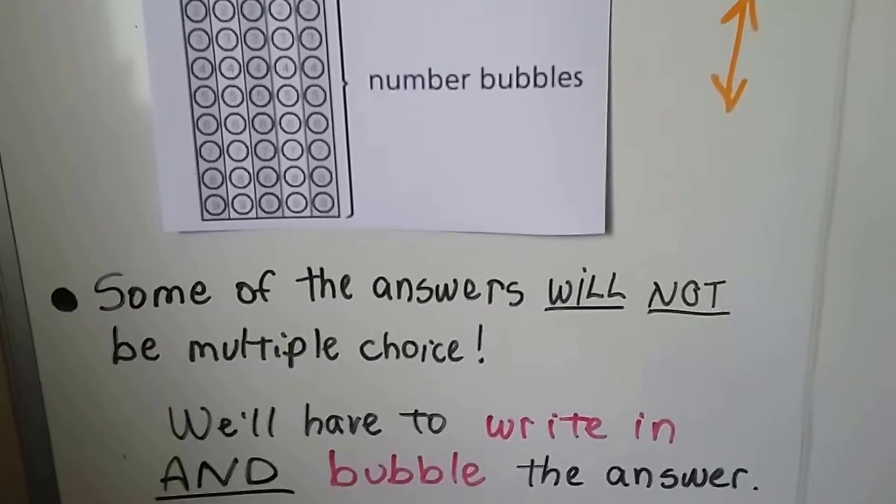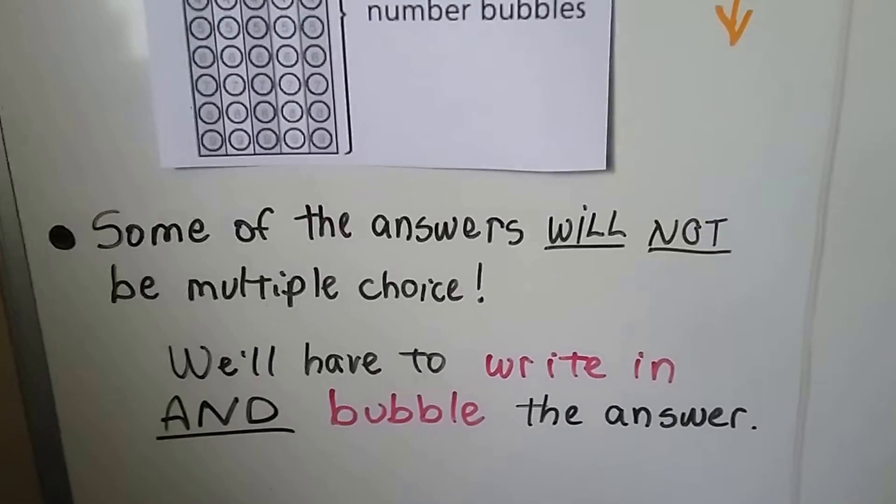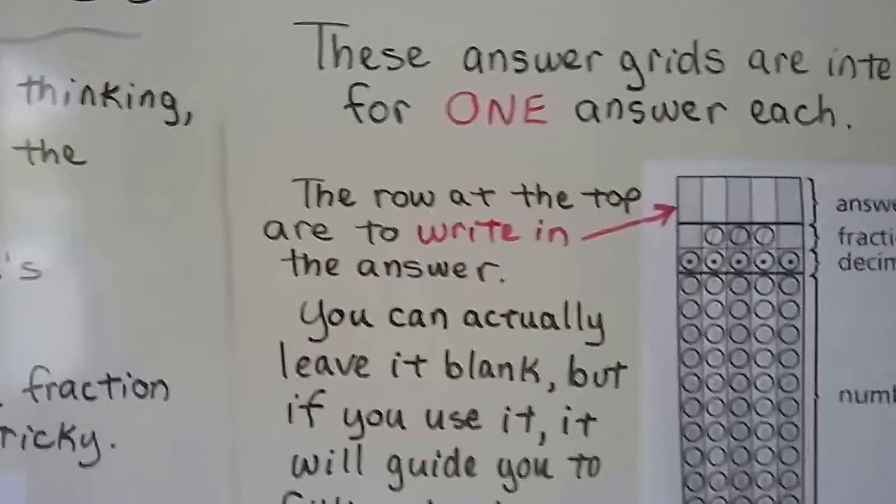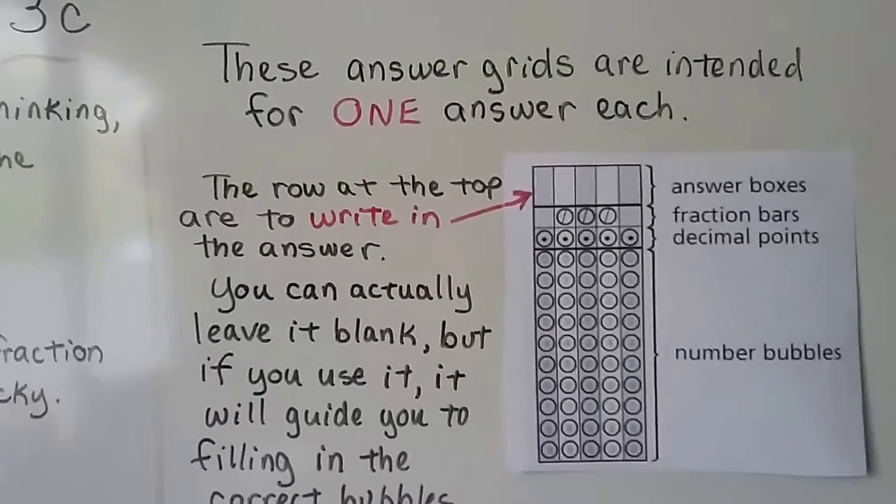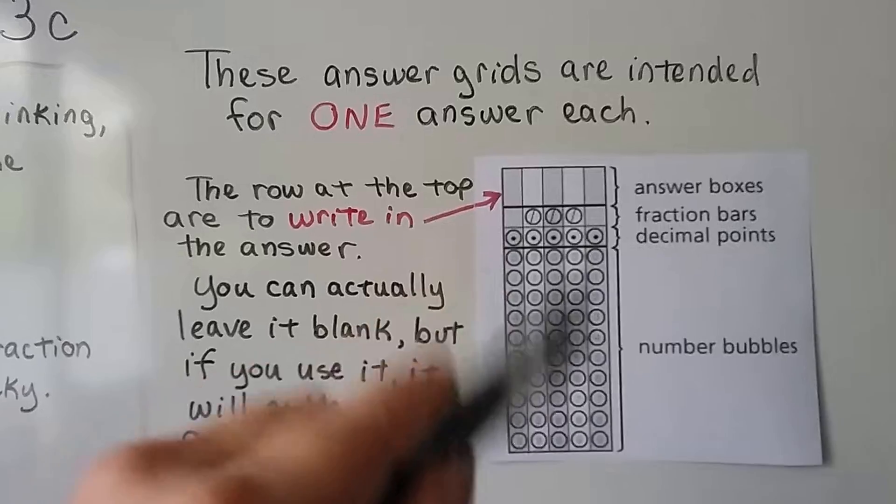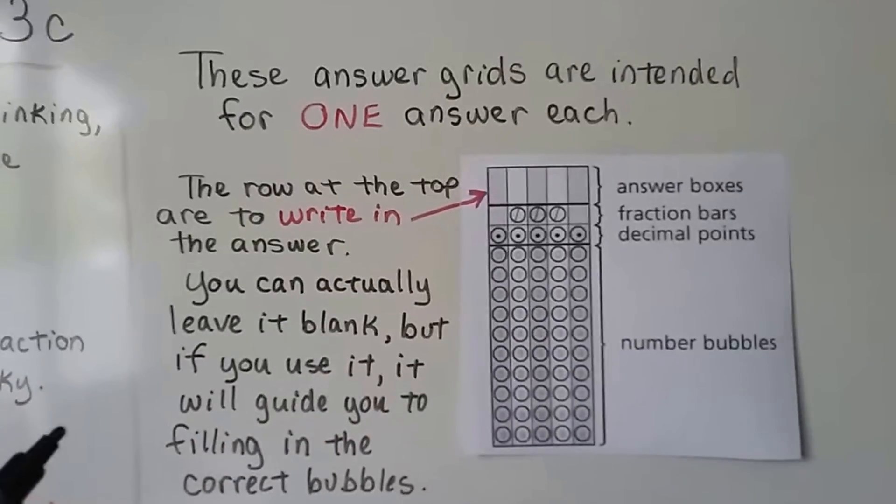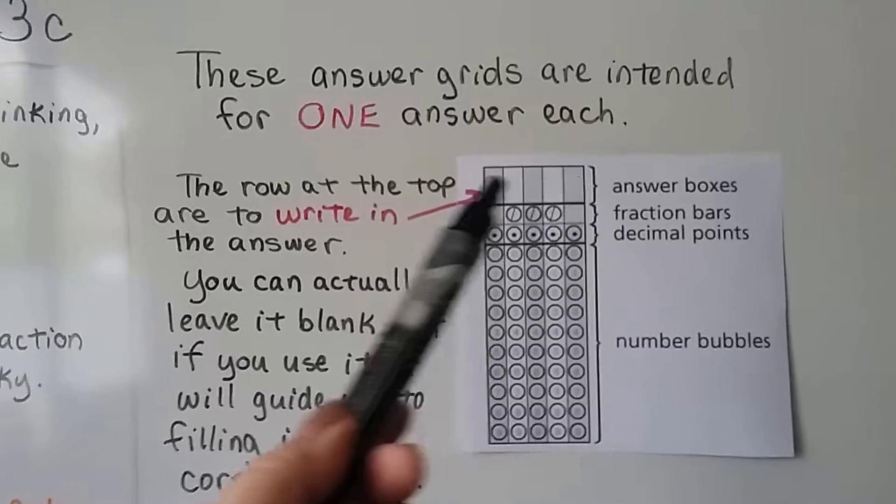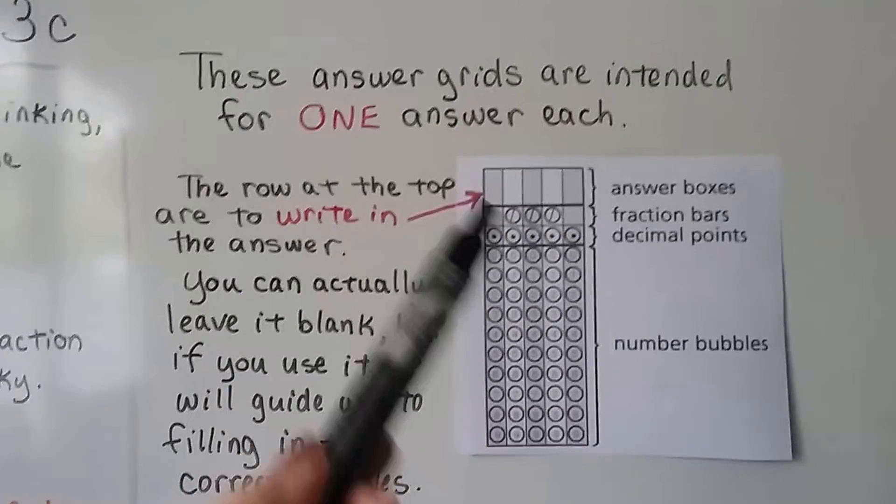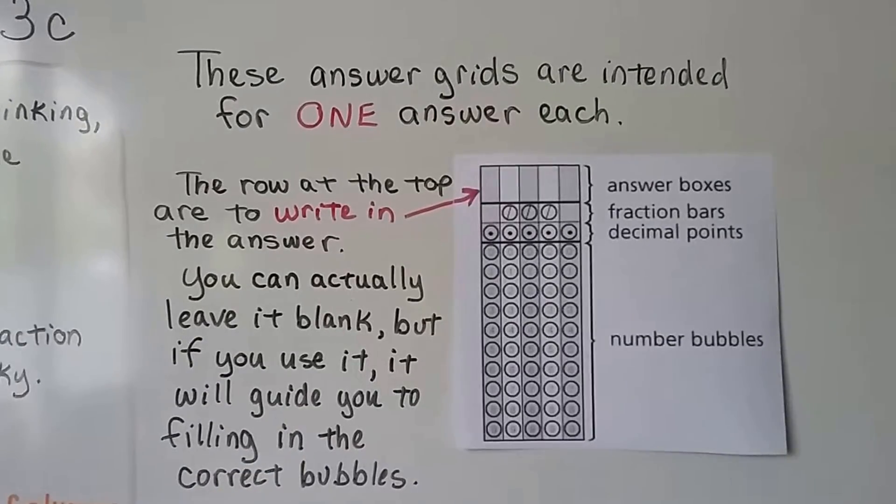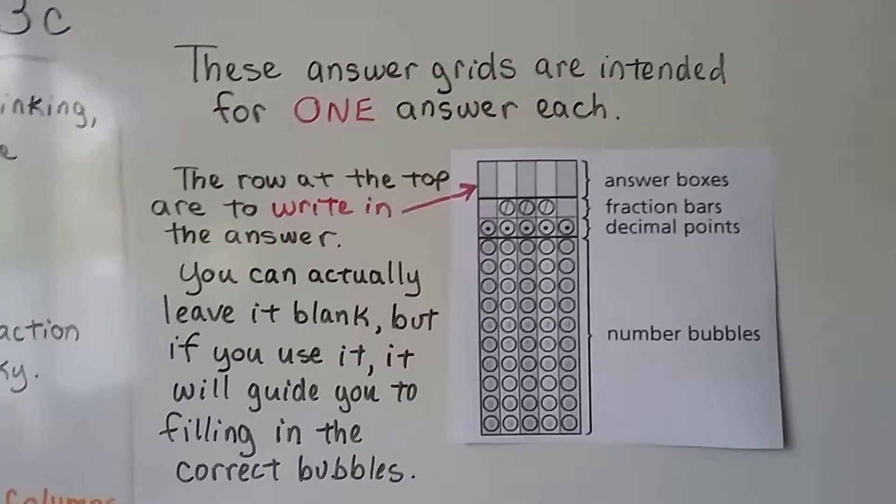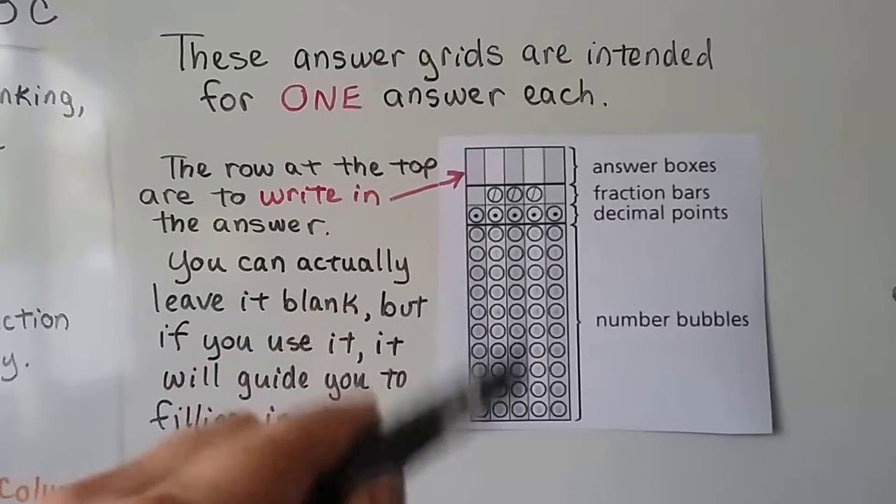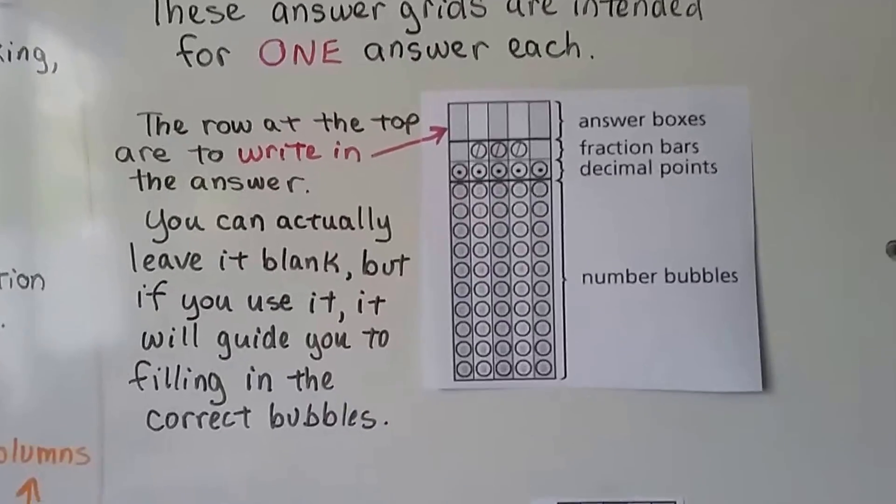Some of the answers will not be multiple choice and we'll have to write in and bubble the answer. These answer grids are intended for one answer each. So you'll have an entire grid like this for only one answer. The row at the top is where we write in the numbers. You can actually leave it blank, but if you use it, you'll have a guide to filling in these bubbles. It'll be easier on your eyes.